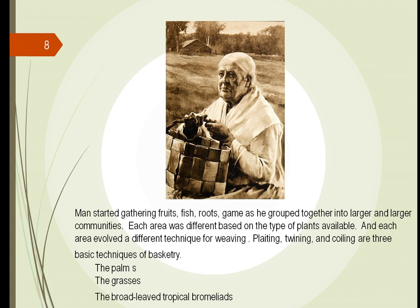As humans started to gather together, they learned they had to share things. And as they were sharing things, baskets were easy to share. Different techniques were developed by each group — whether it was plaiting, twining, or coiling — the three different areas. Each type of community did it differently. For example, grasses were used a lot more in the northern climates, while larger leaves were used in the southern climates.